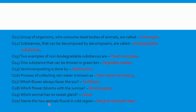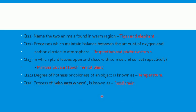Question 20: name two animals found in cold regions — answer is penguin and polar bear. Question 21: name two animals found in warm regions — answer is tiger and elephant. Question 22: processes which maintain balance between the amount of oxygen and carbon dioxide in atmosphere — the processes are respiration and photosynthesis. We tried to understand this with the help of a diagram as well. These two processes are responsible for maintaining balance between oxygen and carbon dioxide in the atmosphere.